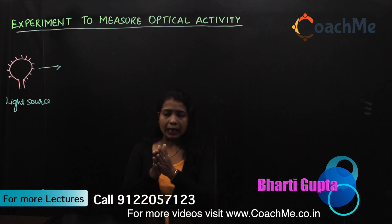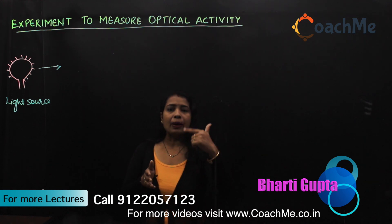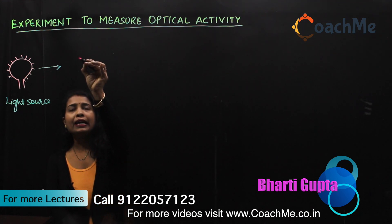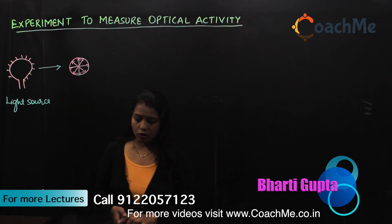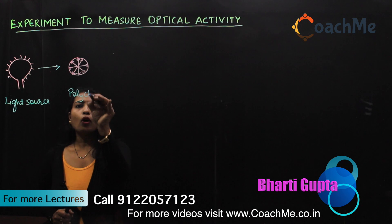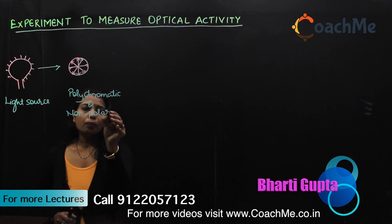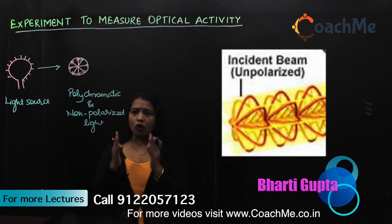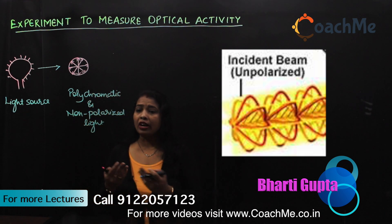When a light particle propagates in a certain direction, it also vibrates in other directions. So along with propagation, the light particle is vibrating in different directions. Such a light beam coming through a light source is called polychromatic and non-polarized light. Non-polarized light means it is vibrating in different directions — the direction of vibrations is not fixed to any particular direction.